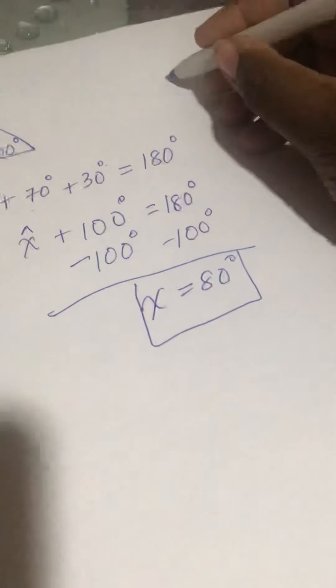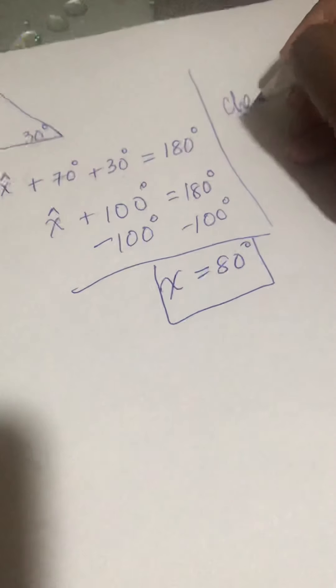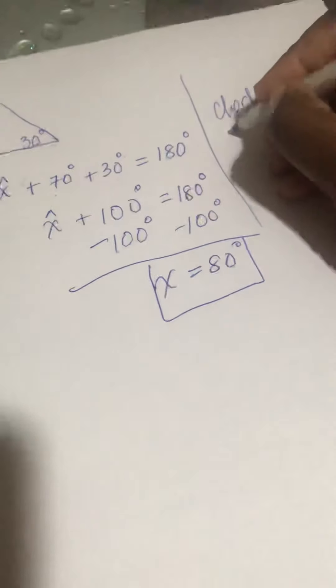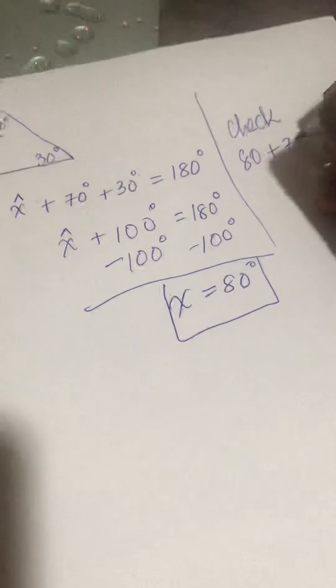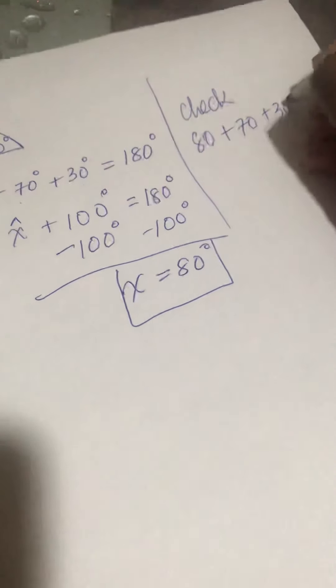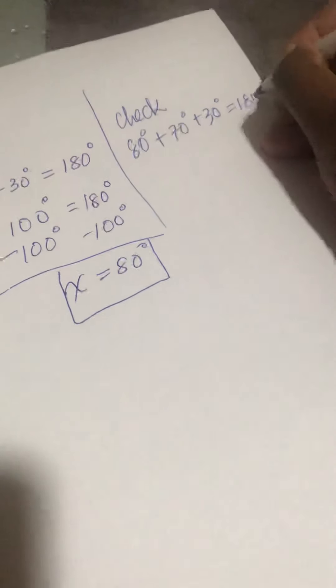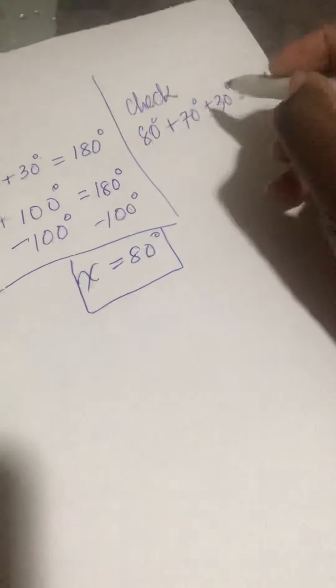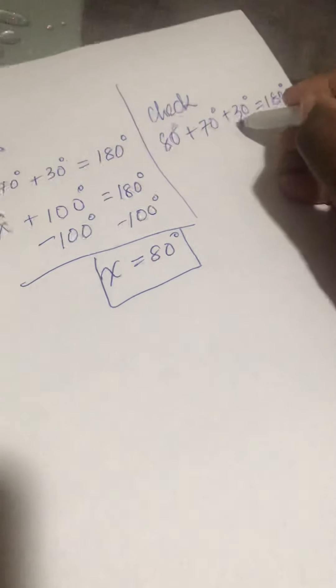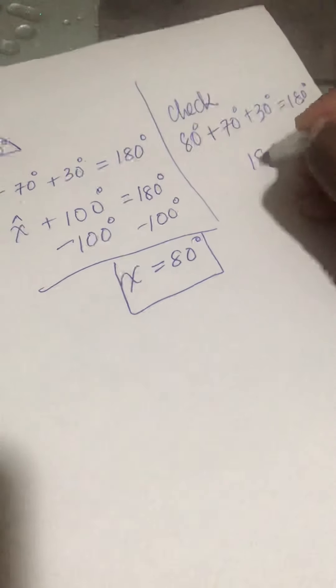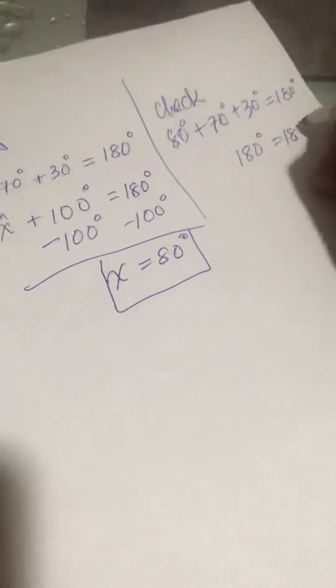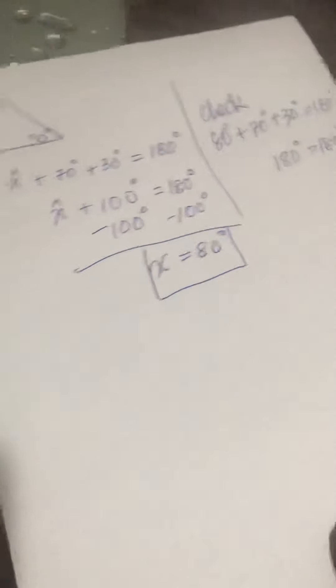After you do this, you check. 80 plus 70 plus 30 degrees equals to 180 degrees. This is 15 plus 3, 18, 180 degrees equals to 180 degrees. You put your check mark.